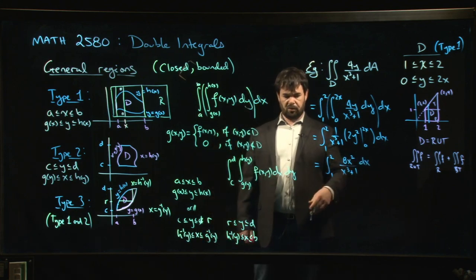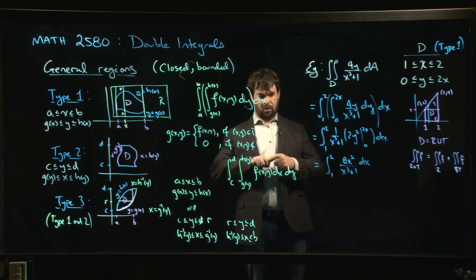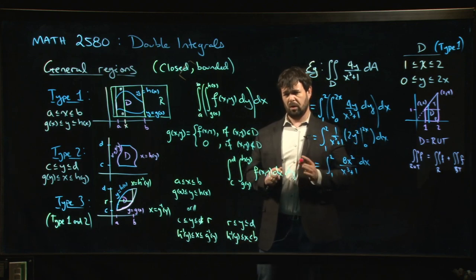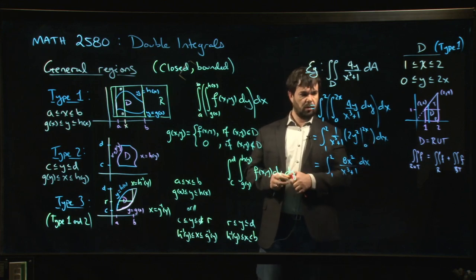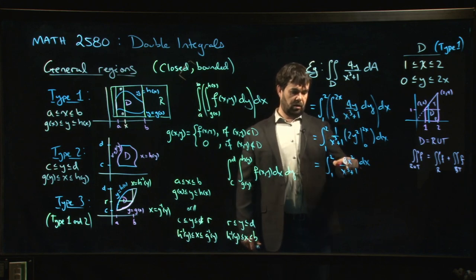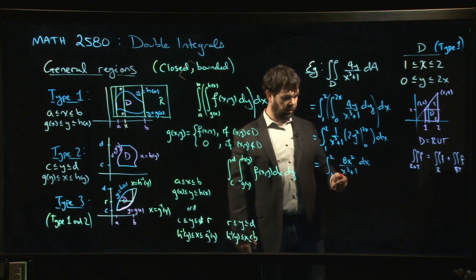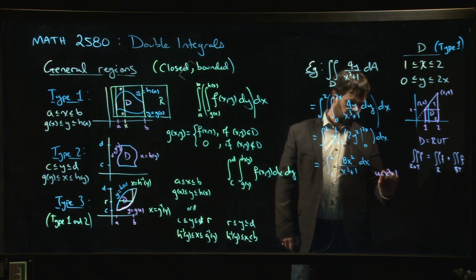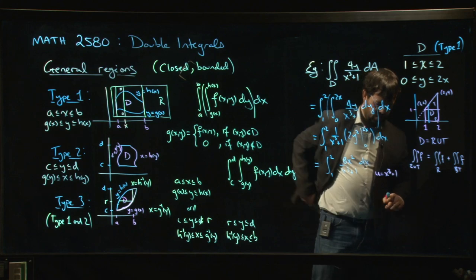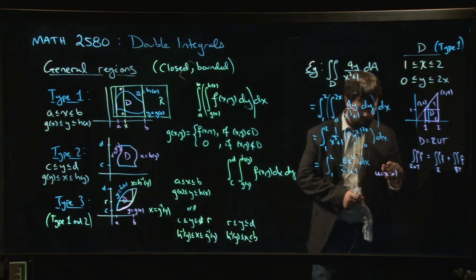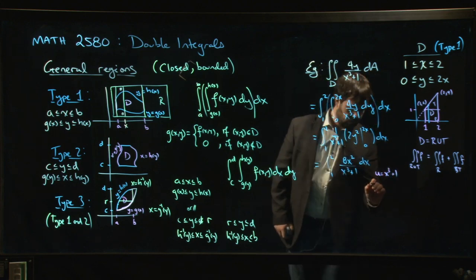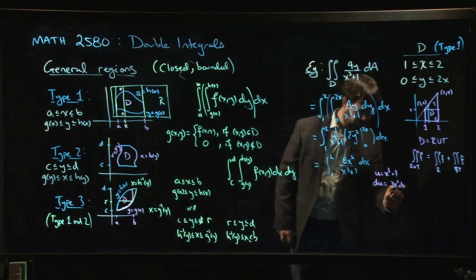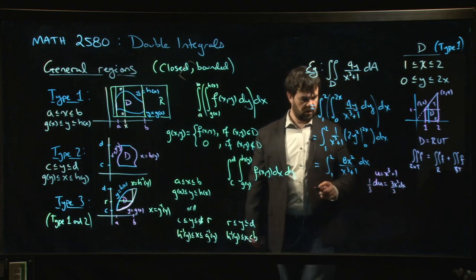Now we can see there's a u-substitution that wasn't previously available to us. Notice how the region of integration plays a role here. We wouldn't have been able to do the antiderivative with respect to x before doing the y integral. The fact that we have this x dependence actually gives us something to work with. So now we can do a u-sub: let u = x³+1, du = 3x²dx. Divide both sides by 3.